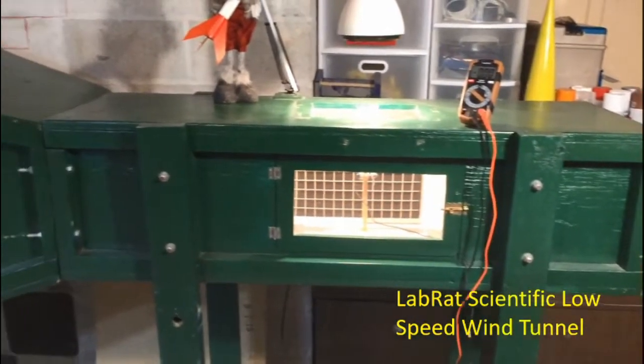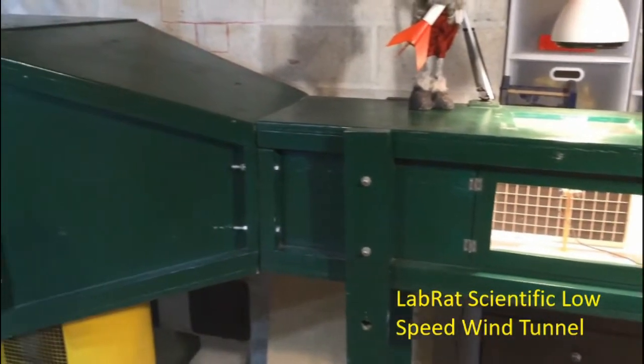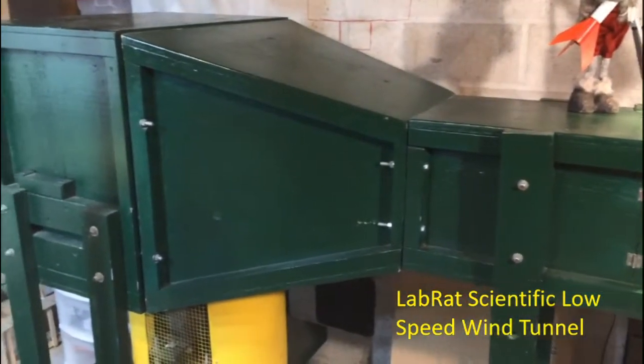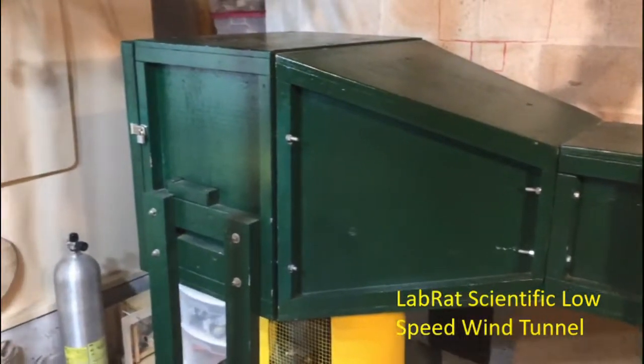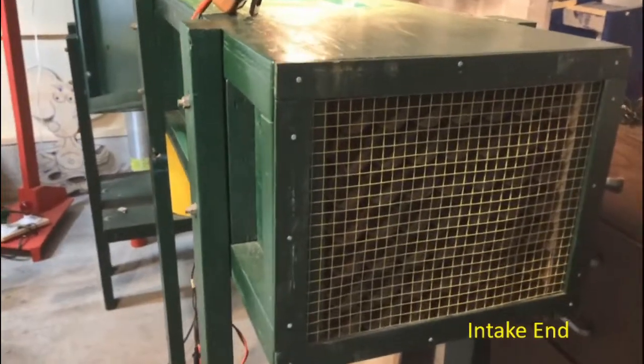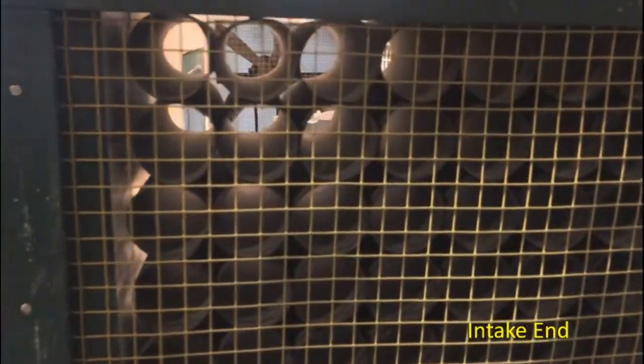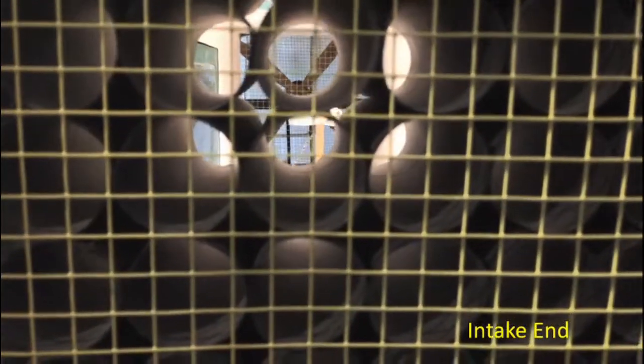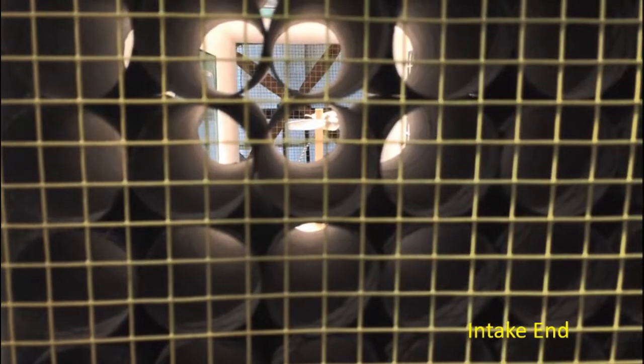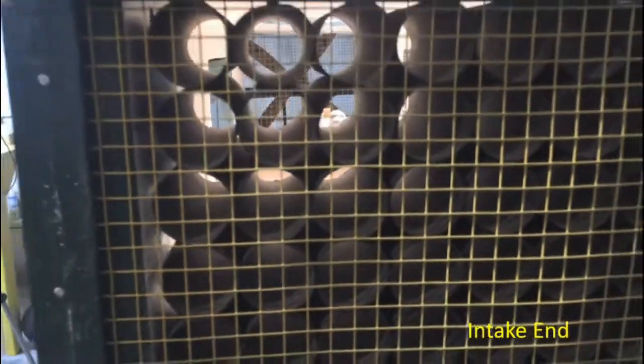My wind tunnel is built out of three-quarter-inch plywood, two-by-twos and two-by-fours, and I use an old electric motor to drive the propeller. This is the inlet section of the wind tunnel. I use toilet paper tubes to help me get a nice straight flow into the test section you see there. In the back you see the propeller that draws the air through the wind tunnel.